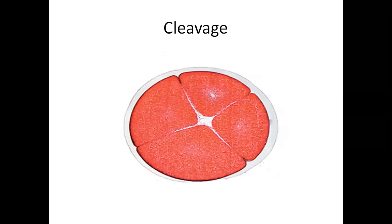Nishechit anda, yagm yugmajan mein samsutri vibhajan vidhi - mitosis se anek vibhajan hote hain. In vibhajanon mein koshika ka aakar nahi badhta hai. Ise vidalana kehte hain, tatha vidalana sirf bhrun mein hi paya jata hai. Vidalana ko hum segmentation bhi kehte hain. Vidalana ke karan hi ek koshika yugmak mein anek koshikayen ban jati hain, jo ki vibhinn ang tantraon ka nirman karti hain.